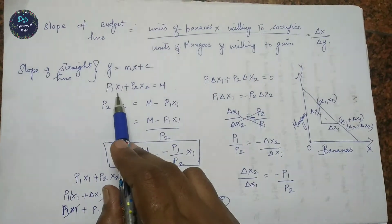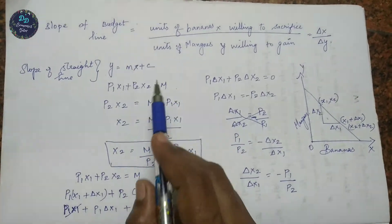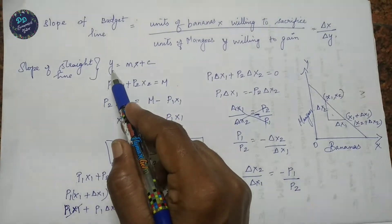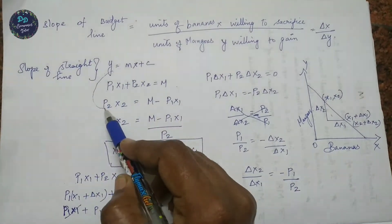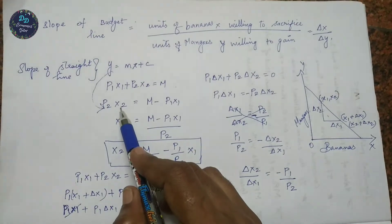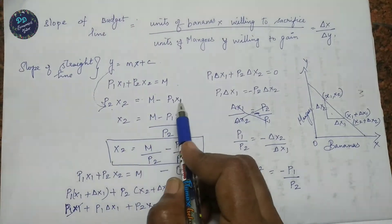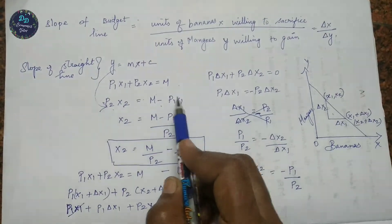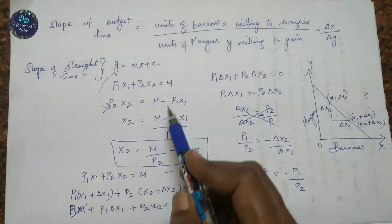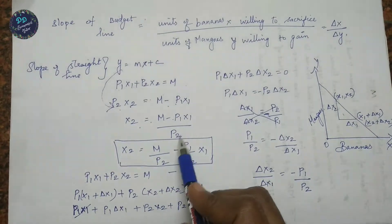From the budget line equation p1·x1 + p2·x2 = M, we isolate x2. Moving p1·x1 to the right side gives p2·x2 = M − p1·x1. Dividing both sides by p2 gives x2 = M/p2 − (p1/p2)·x1. This is in the form y = mx + c, where the slope is −p1/p2.